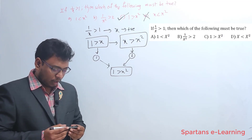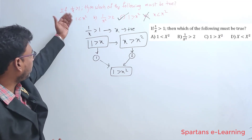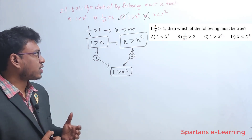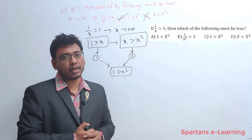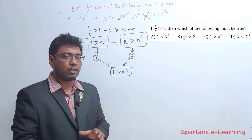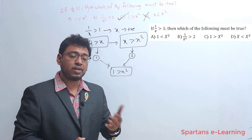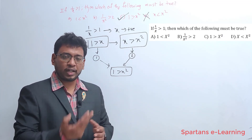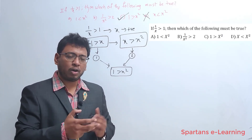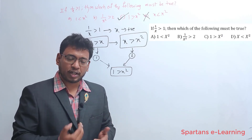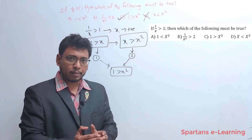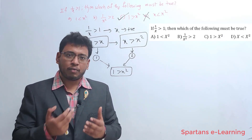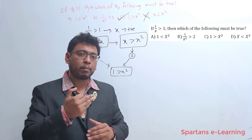An obvious way of solving this is to substitute values, but don't do that. I keep telling you always try to avoid taking values and checking in algebra. That strategy has been disproved. Always try to simplify the question — that is the best way to solve algebra rather than substituting values, because substituting means you have to check multiple numbers: positive, negative, fractions, improper fractions, proper fractions. That consumes a lot of time. Simplify first, then get the answer.